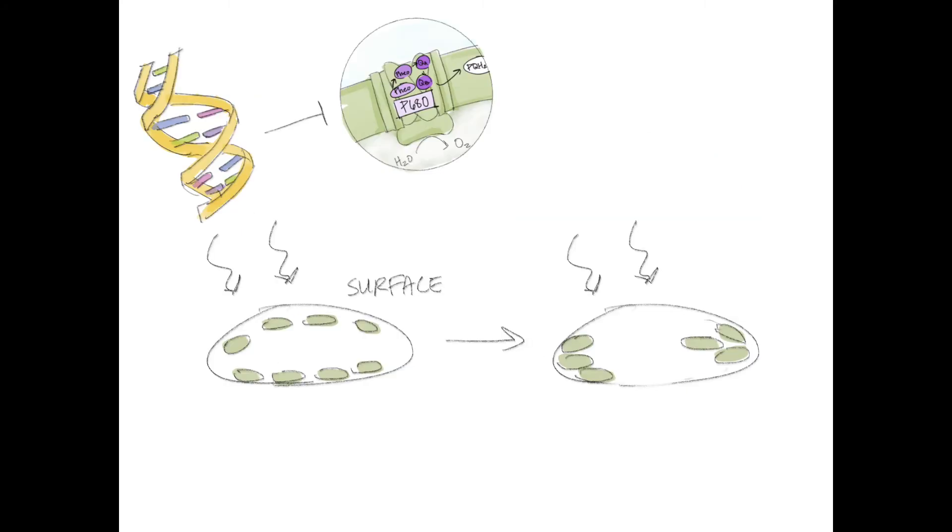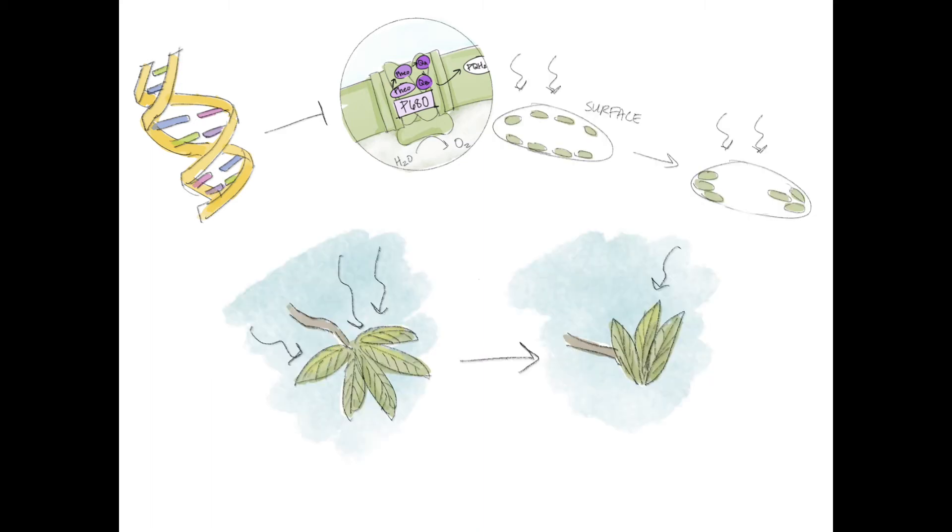Similarly, some higher plants can change the distribution of chloroplasts within cells, while others simply reduce the surface area exposed to light by changing the angles of their leaves. However, these mechanisms simply try to avoid light and are slow to occur. They aren't completely effective in protecting plants from sudden fluctuations in light and other stresses as seen in nature.